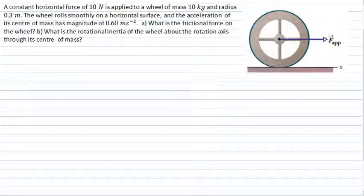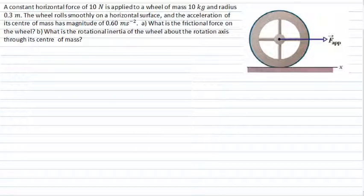This PhysCast deals with a situation involving an unusual looking wheel. Please pause the video and read through the question. The question wants us to find two things: firstly, what is the frictional force which acts on the wheel (part A), and secondly, what is the rotational inertia of this unusual looking wheel about the rotation axis (part B).